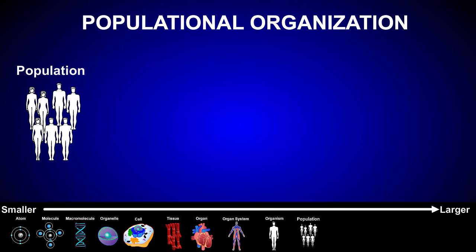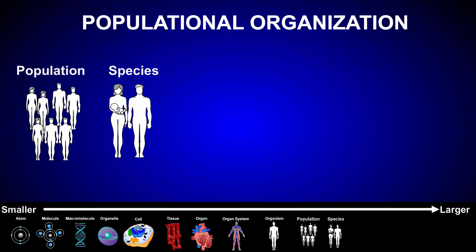All the populations of a particular kind of organism together form a species. Members of a species are similar in appearance and are able to interbreed. The modern species of humans, to which we all belong, is referred to as Homo sapiens.